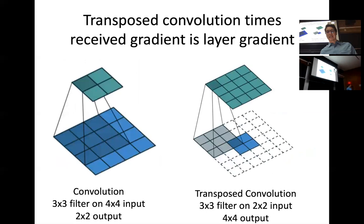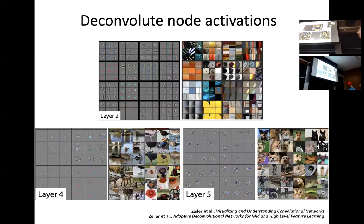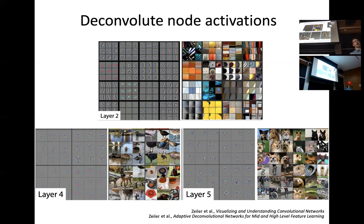One more point from the deconvnet: we see a similar pattern. Images that yield very high activations at layer two compared to layer four or five — when we back out the deconvolutions — show edges in various orientations and very simplistic shapes. As you go to deeper layers in the neural network, you see more complicated representations. Similar pattern to what we saw before.